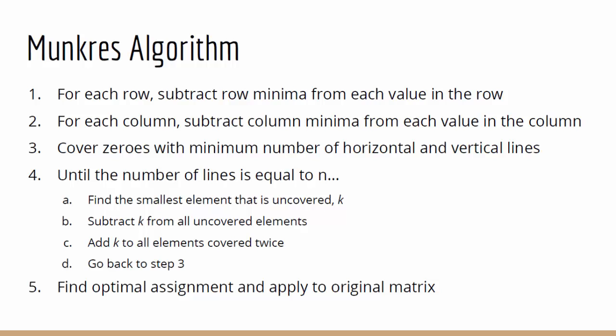The next step is to cover all the zeros in our matrix with the minimum number of horizontal and vertical lines. If the number of lines is equal to the number of rows in the matrix, then we are finished and we can pick an optimal assignment and apply it to our original matrix.